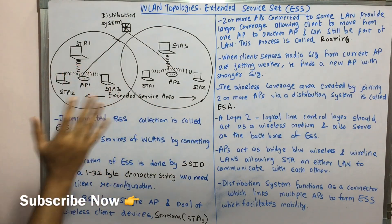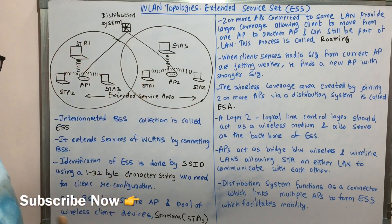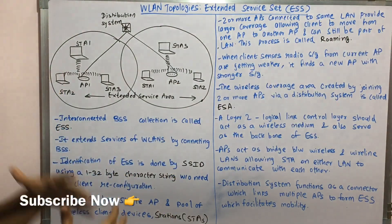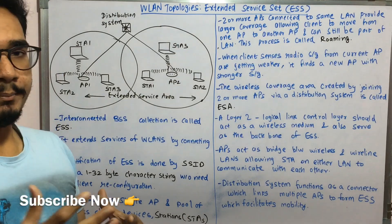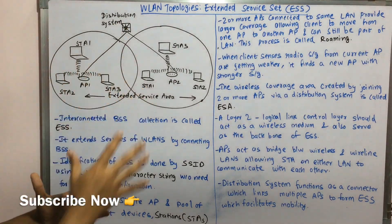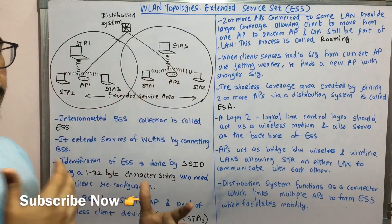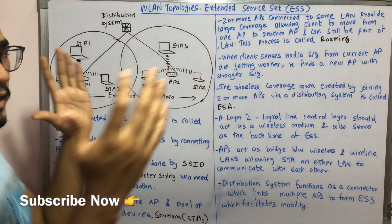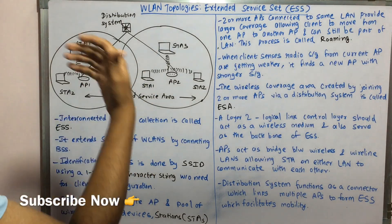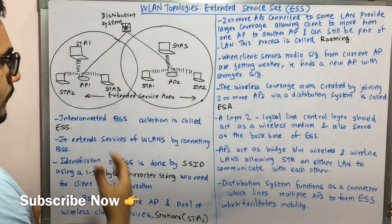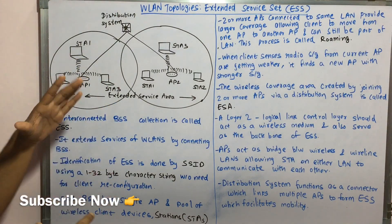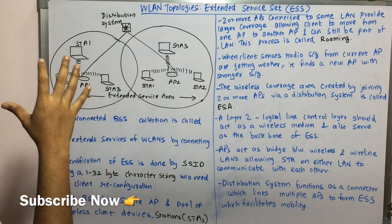The ESS is essentially the interconnection of different BSSs. In a BSS, you saw there was an independent BSS and an infrastructure BSS. Similarly, when you collaborate different independent and infrastructure BSSs and bring them together, you form an extended service set. It basically extends the services of WLANs by connecting different BSSs.